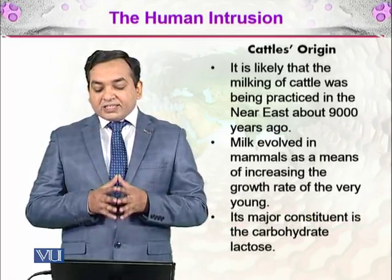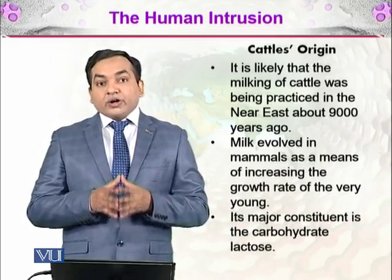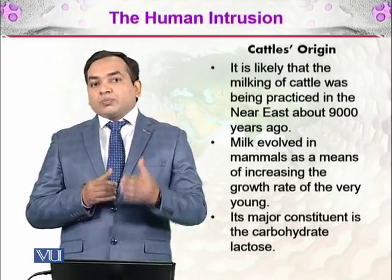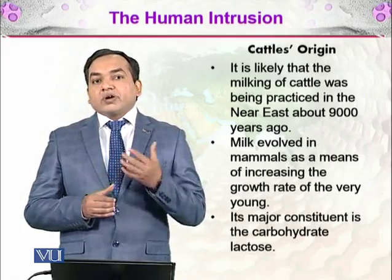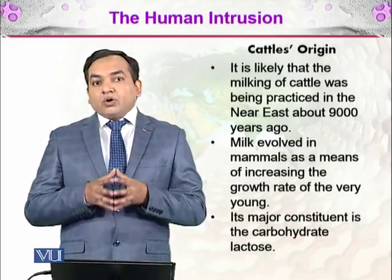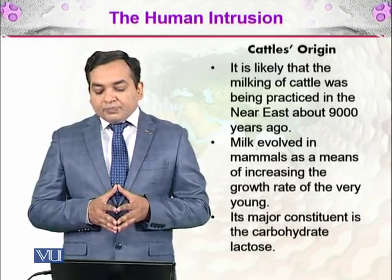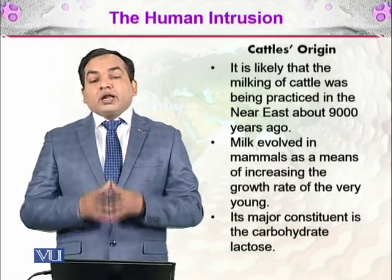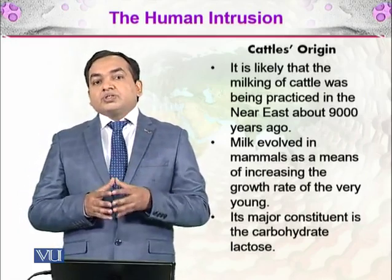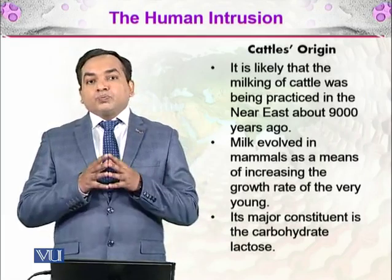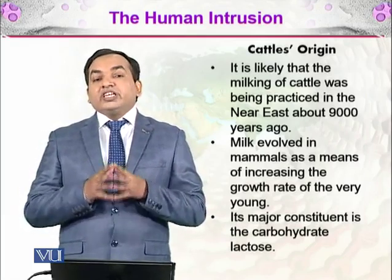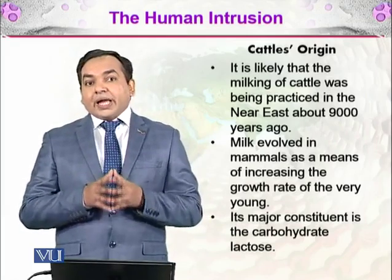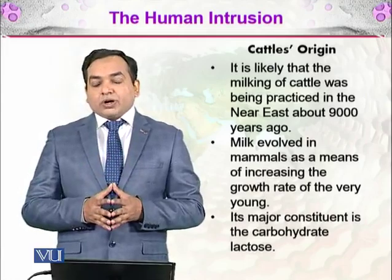Milk evolved in mammals as a means of increasing the growth rate of the very young. These mammals were domesticated partly because they were helpful in feeding their young ones. The major constituent of milk is the carbohydrate lactose. To digest this sugar, the enzyme lactase is needed — and while some human beings possess this enzyme, others lack it, which will be discussed further.